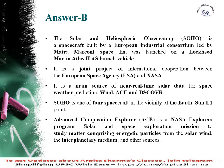The answer here is B. The Solar and Heliospheric Observatory SOHO is a spacecraft built by a European industrial consortium led by Matra Marconi Space. It was launched on Lockheed Martin's Atlas 2AS launch vehicle. It is a joint project of the European Space Agency and NASA, and is the main source for real-time solar data and space weather prediction.